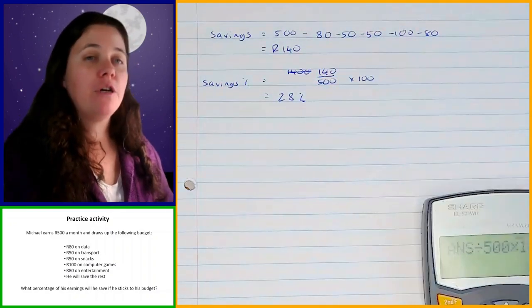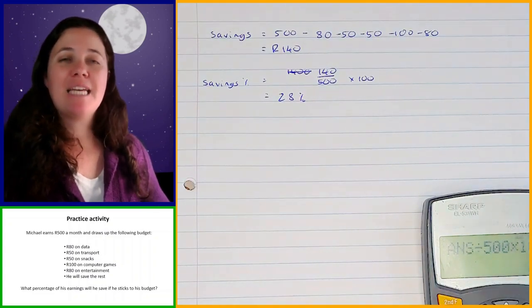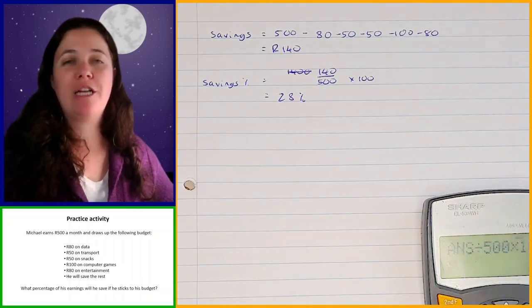So, you should have found that the percentage of his earnings that he will save is 28 percent. And that is how we work with budgets when we're doing financial maths.